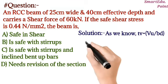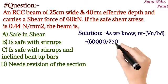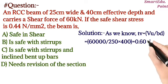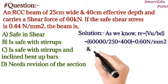As we know, tau equals to Vu by bd, that is nominal stress equals to Vu by bd. So if we put the values of ultimate shear force and the effective dimensions, we will get tau equals to 0.6 newton per mm square.